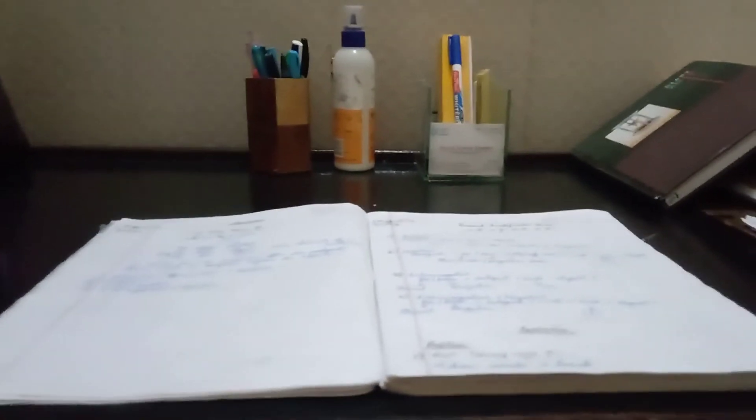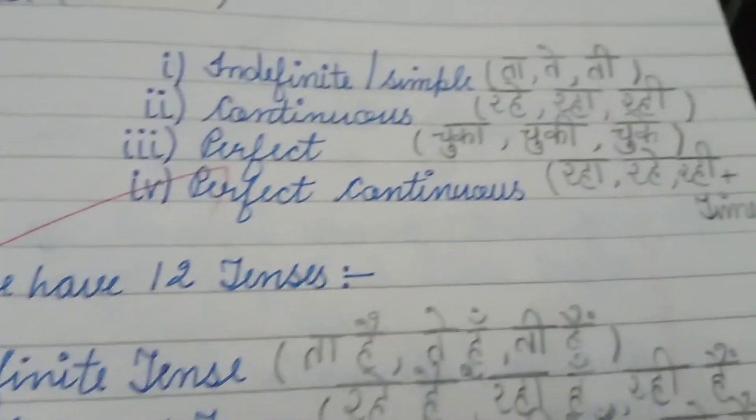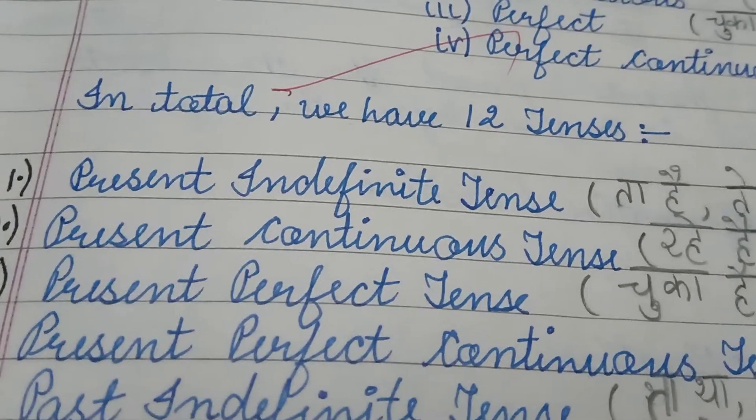First is indefinite, second is continuous, and third is perfect. Fourth is perfect continuous, as we discussed in the previous class.